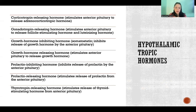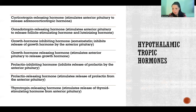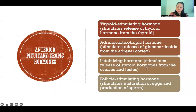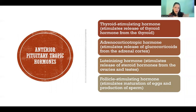Finally, thyrotropin-releasing hormone stimulates release of thyroid-stimulating hormone, another tropic hormone, from the anterior pituitary gland. So the anterior pituitary has only four tropic hormones, all of which I just mentioned because they are triggered to be released by the hypothalamus.